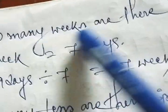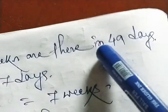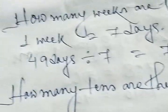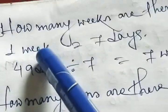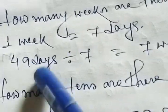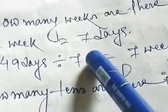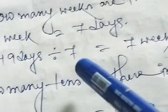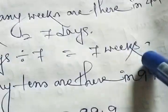Next H, how many weeks are there in 49 days? We know one week equal to seven days. So in 49 days, how many seven days are there? So 49 days divided by 7 equal to 7 weeks.